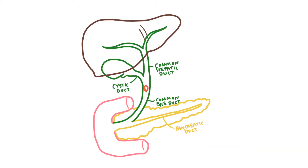Maybe the obstruction is in the common bile duct. Here, bile still can't leave the gallbladder, so the patient may have biliary colic or cholecystitis. But at this point we're also blocking the flow of bile from the liver. With nowhere else to go, that bile backs up into the liver, the bilirubin builds up and the patient will become jaundiced.